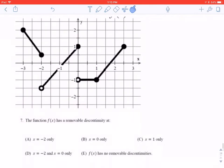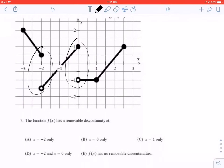Number 7. This function has removable discontinuity at no, no. Those are the only places it could be. And it has neither of those because those are jump discontinuities. So that's E.